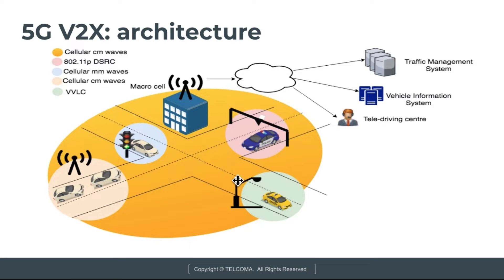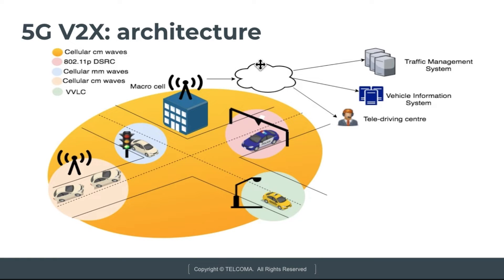The VVLC waves are provided by the street light in this area. From here, we conclude that cellular centimeter waves denote the large macro cell, whereas this technology makes small cells within the large macro cell. This antenna provides cloud connectivity with the traffic management system, vehicle information system, and the tele-driving center.